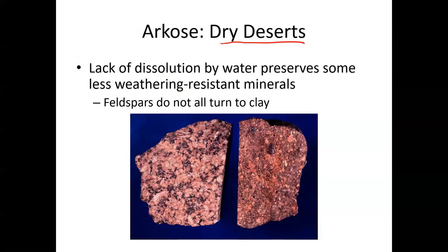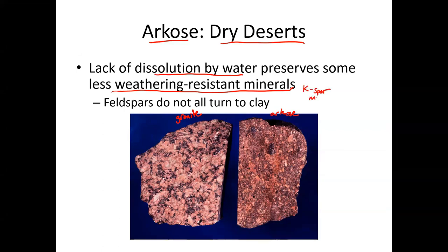Another feature in dry deserts is a type of sandstone called arkose. This is granite over here, and this is a somewhat similar-looking but sedimentary rock called arkose. The lack of dissolution by water preserves less weathering-resistant minerals. Quartz will stick around because it's resistant to weathering, but without dissolution you also get potassium feldspar and mica persisting. As a result, the feldspars don't all turn to clay, and you get sandstones with big pink or white rectangles of feldspar. Finding arkose would indicate the ancient environment was a desert — there wasn't enough water around to turn the feldspars into clay.